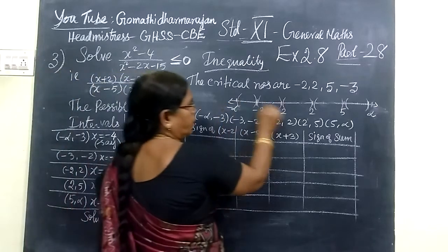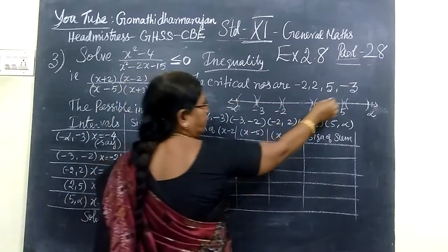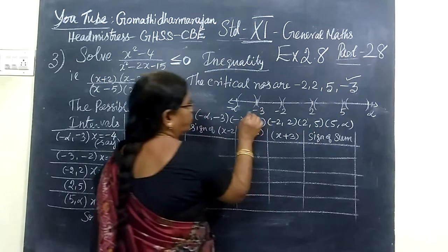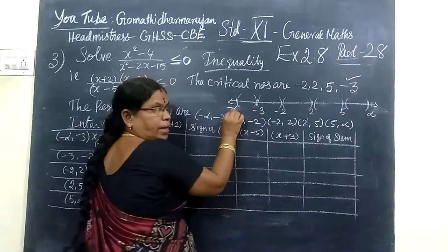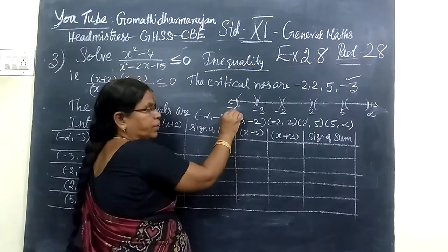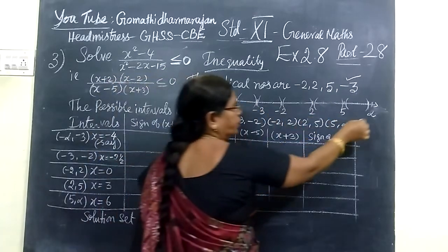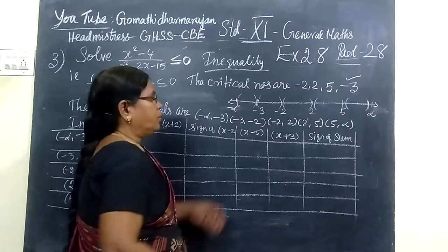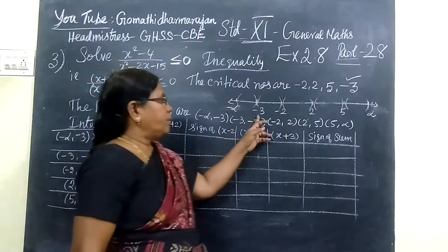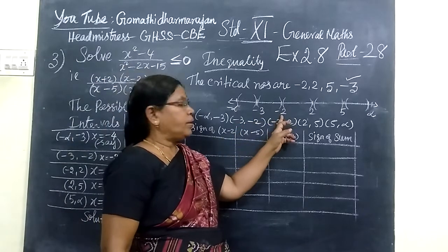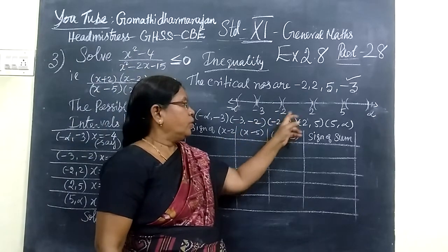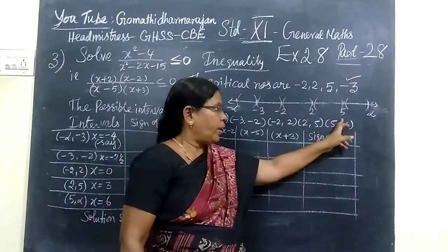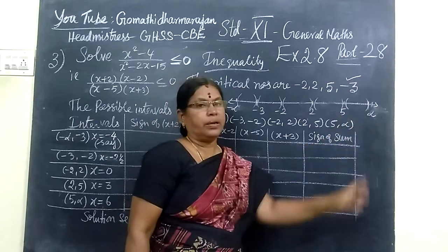So we are making the intervals. We draw the number line. We have to start with minus 3. As usual, we are writing from minus infinity to plus infinity. So here: minus 3, minus 2, 2, then 5, then infinity.